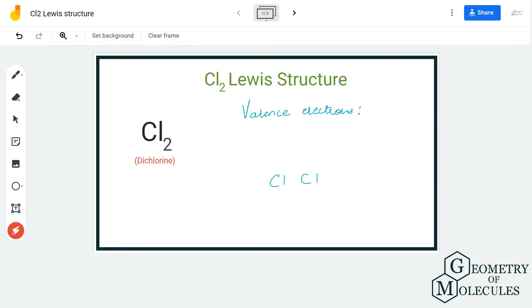Here we have two chlorine atoms and each atom has seven valence electrons in its outer shell, which means we have a total of 14 valence electrons for Cl₂.